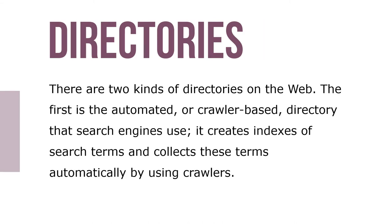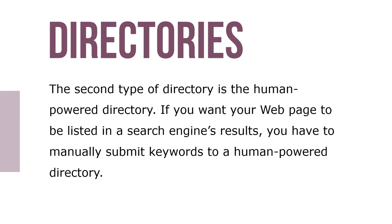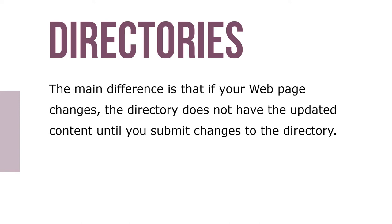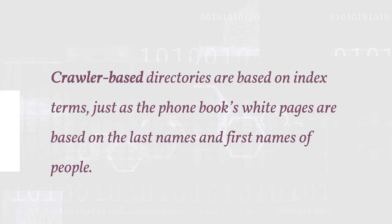There are two kinds of directories on the web. The first is the automated or crawler-based directory that search engines use. It creates indexes of search terms and collects these terms automatically by using crawlers. The second type is the human-powered directory. If you want your web page to be listed in a search engine's results, you have to manually submit keywords. The main difference is that if your web page changes, the directory does not have the updated content until you submit changes. Popular-based directories are based on indexed terms, such as the phone book's white pages are based on last name and first name.